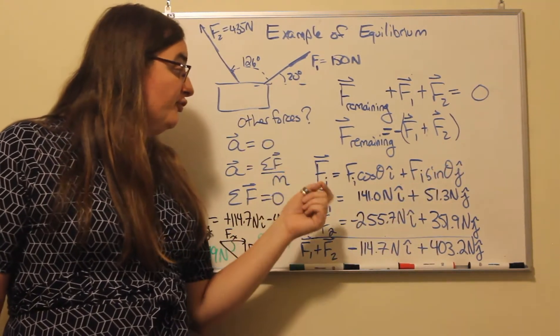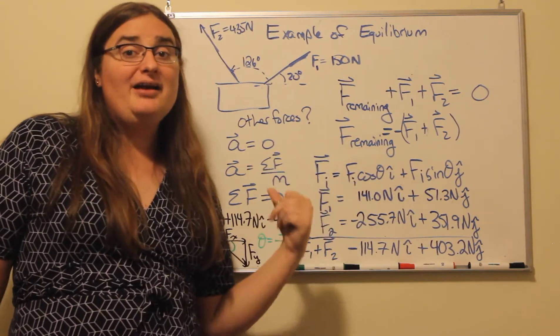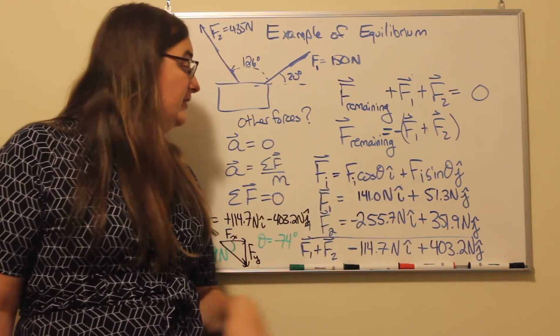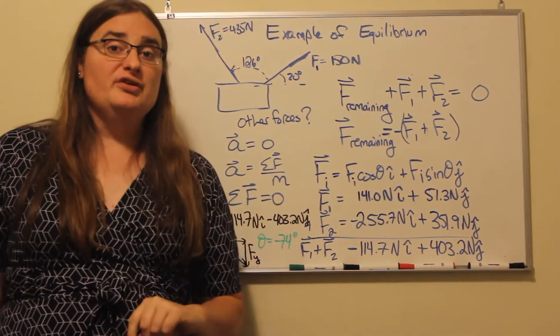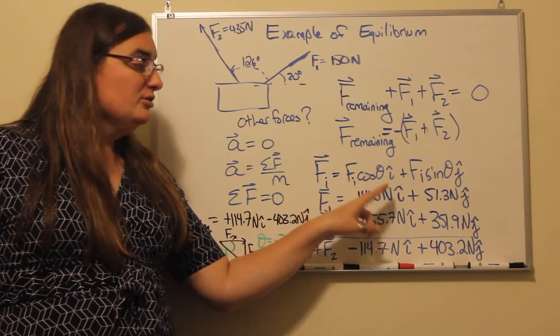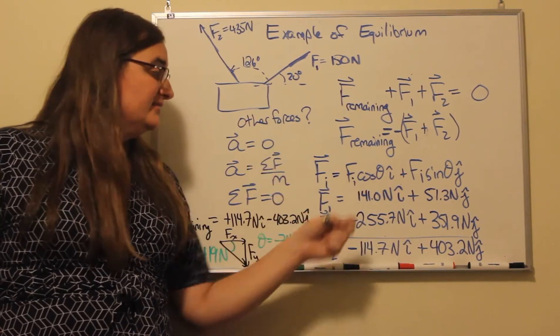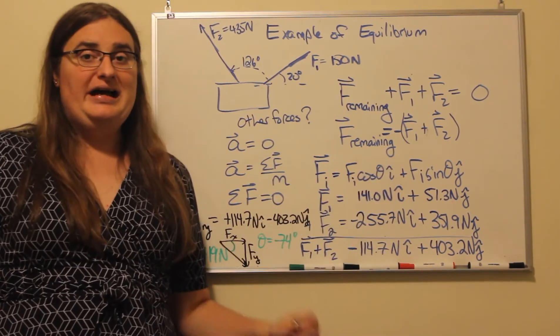For our force, if we're measuring our angle from the horizon, then our force is going to equal our total magnitude of our force times the cosine of the angle from the horizon in the x direction, i hat.